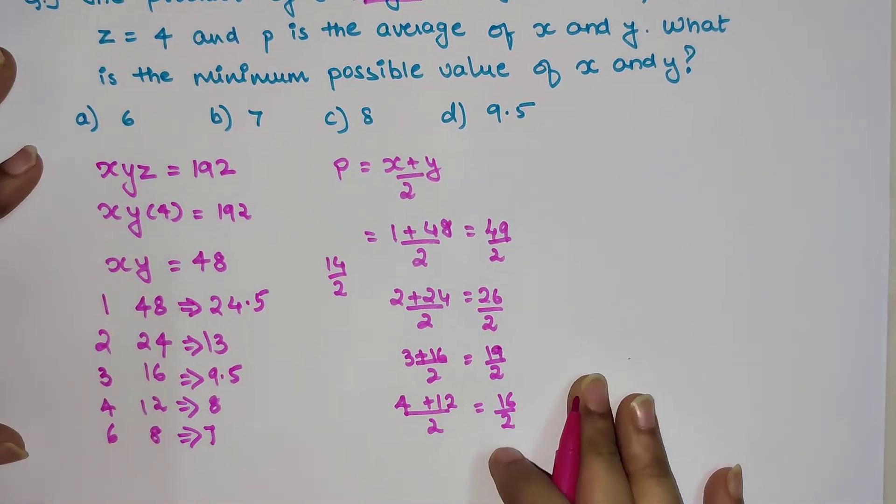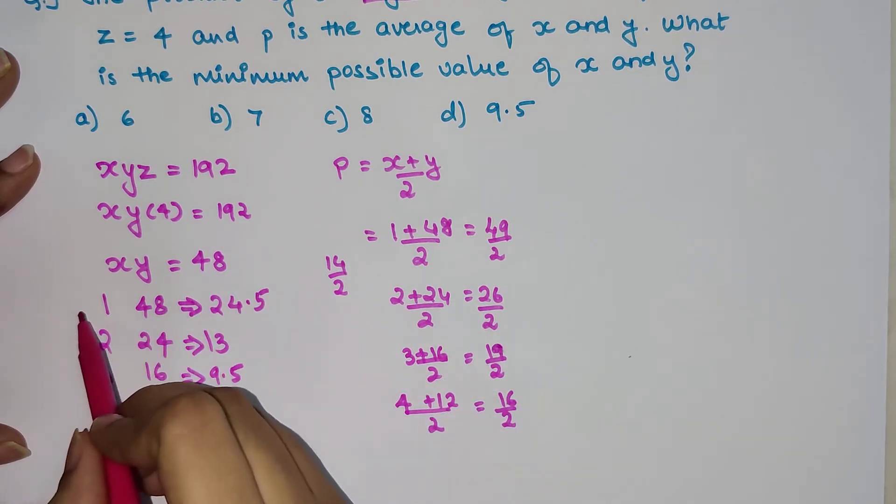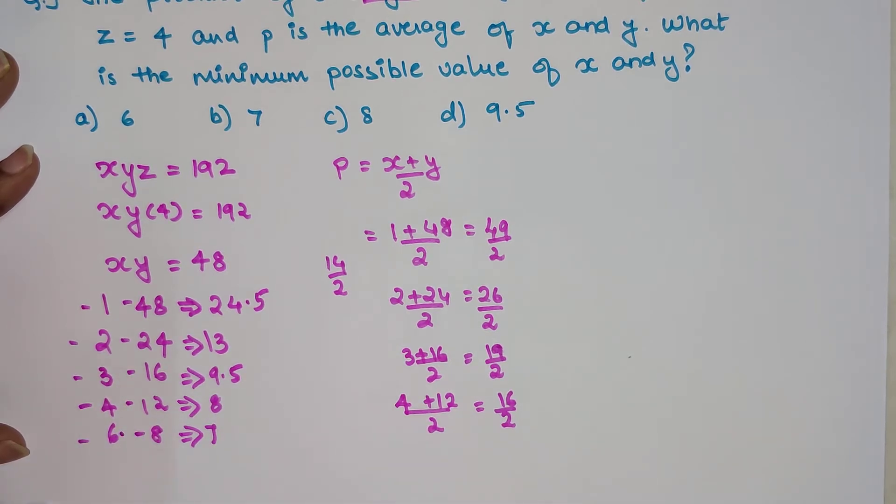Because we missed out on a very important part, and that is nothing but they're integers. Here, in order to get the product of 48, which is a positive number, I can have both of these numbers as negative.